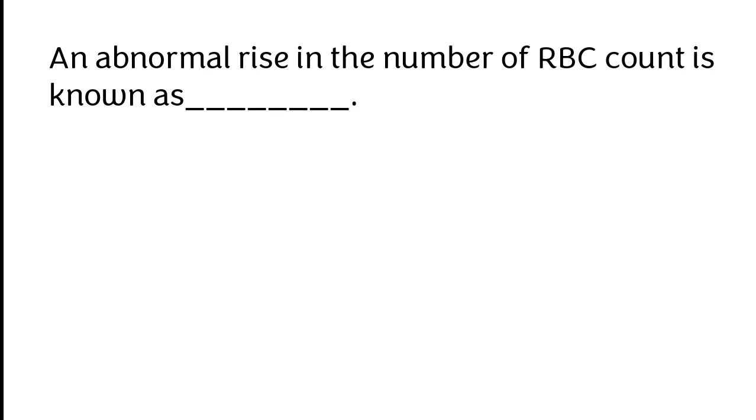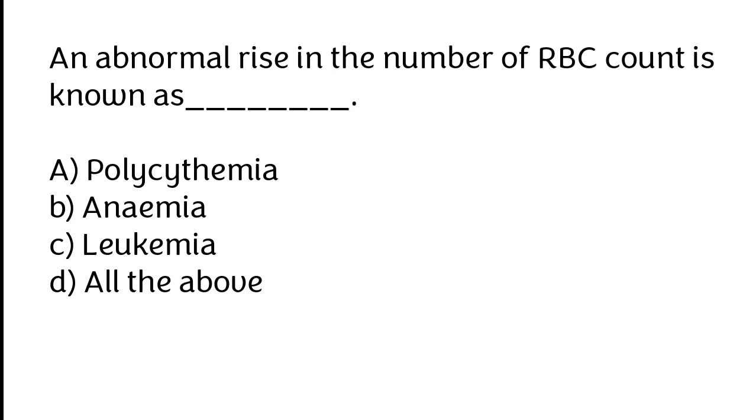An abnormal rise in the number of RBC count is known as polycythemia, anemia, leukemia, or all of the above. The correct answer is option A. An abnormal rise in the number of RBC count is known as polycythemia.